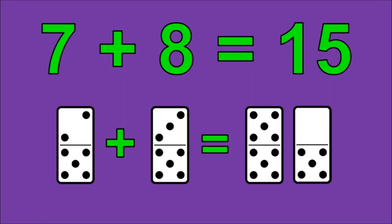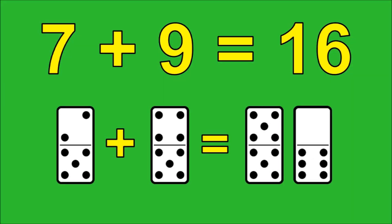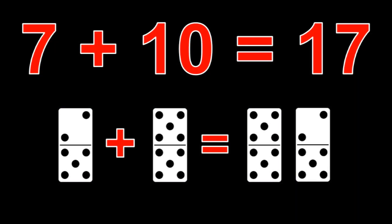7 plus 8 is 15, 7 plus 9 is 16, 7 plus 10 is 17.